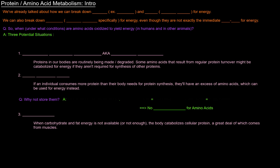We've already talked about how we can break down carbs for energy via glycolysis. We've also talked about how we can break down fats or fatty acids specifically for energy via beta-oxidation. But we can also break down proteins or amino acids specifically. We could break them down for energy, even though they're not exactly the go-to as far as energy sources go.